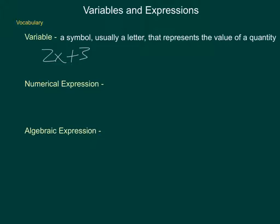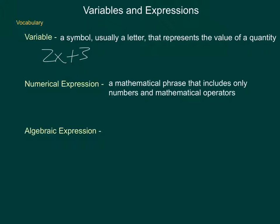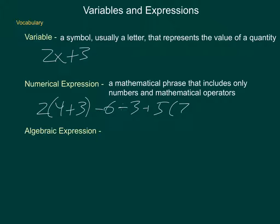Next up is numerical expression. A numerical expression is a mathematical phrase that includes only numbers and mathematical operators. For instance, 2 times 4 plus 3 minus 6 divided by 3 plus 5 times 7 — since the only things included here are numbers and mathematical operators, meaning addition, subtraction, multiplication, and division, this is a numerical expression. Now if I have something similar but it includes variables, we have an algebraic expression.